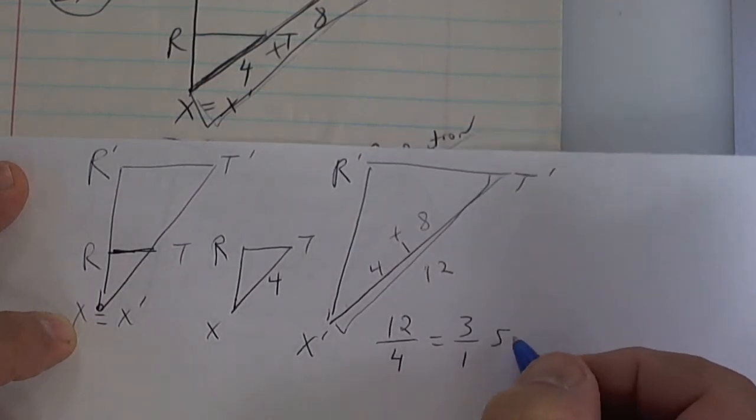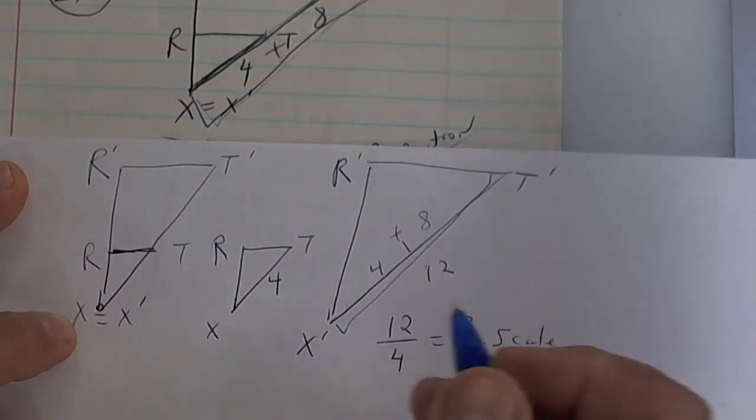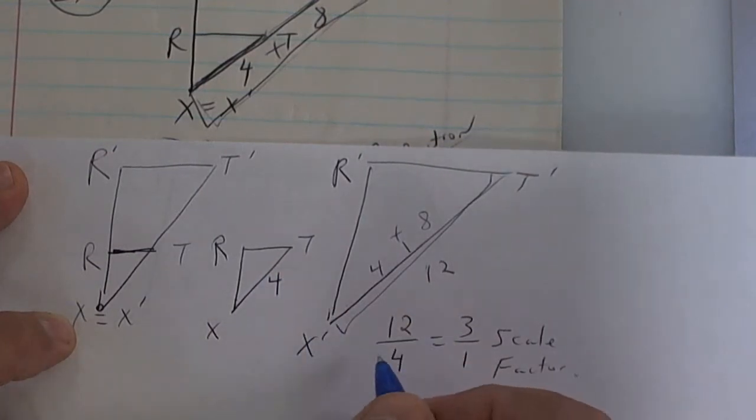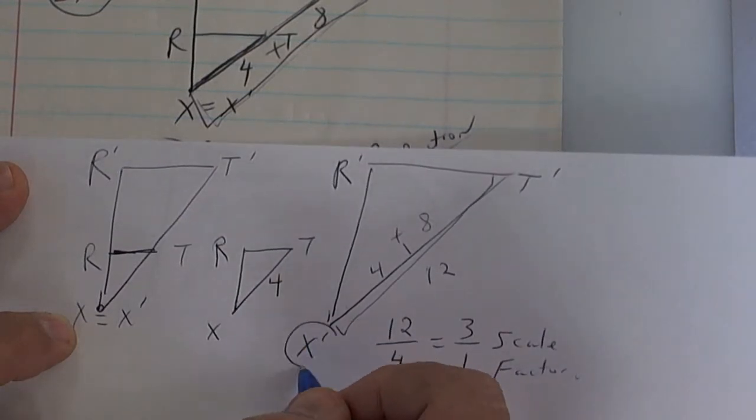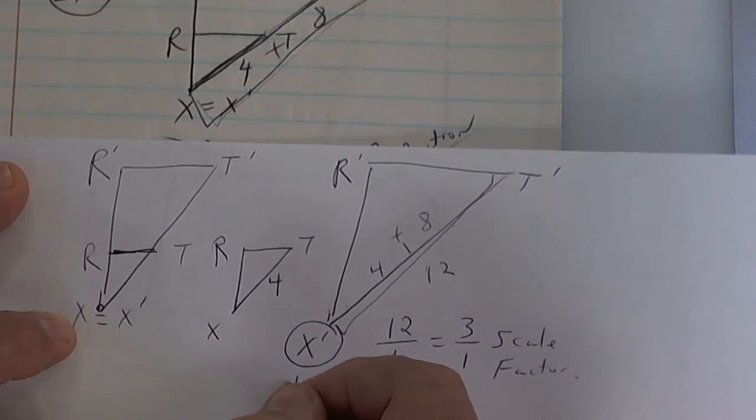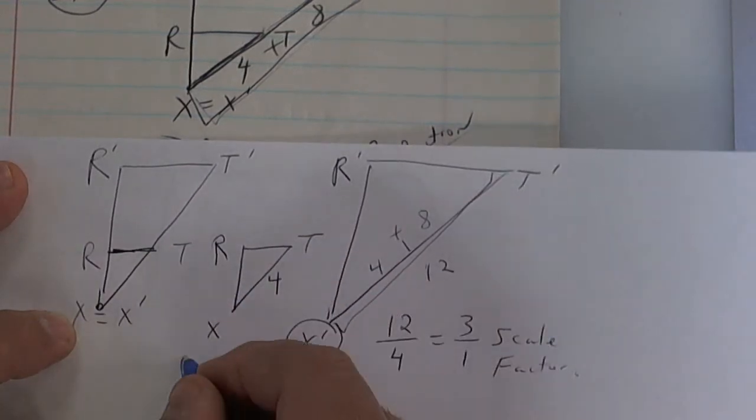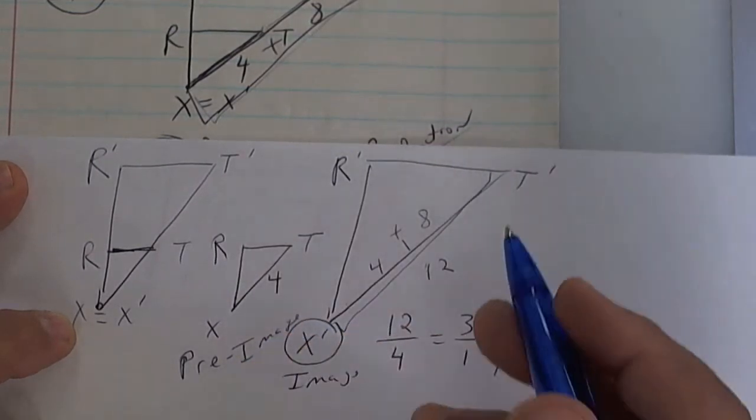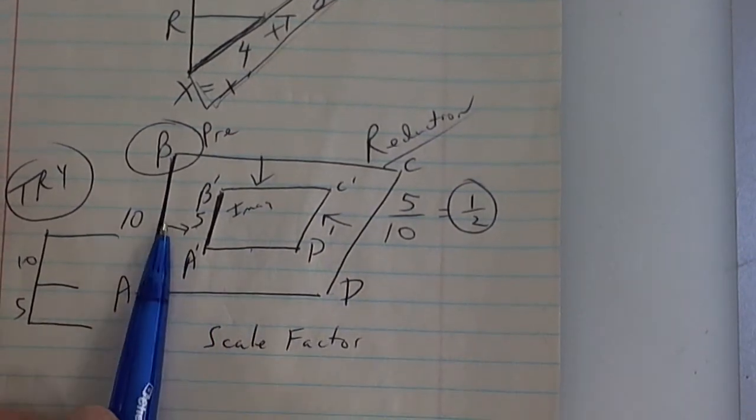Since the figure is going from small to large, it is an enlargement. Put the larger number on top: 12 over 4 reduces to 3 over 1. That is your scale factor, a 3 to 1 ratio. If it was going from bigger to smaller, you would put the smaller number on top. The one with the prime is the second image, called the image. The starting one with no prime is called the pre-image. It's just terminology but you need to know it.